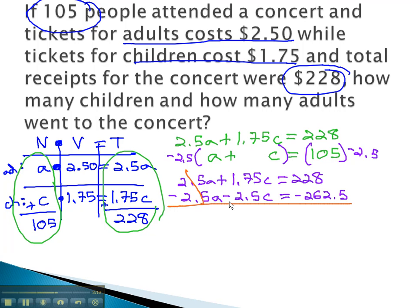We can now add those together, with the a's subtracting out and eliminating, giving us negative 0.75C equals negative 34.5.